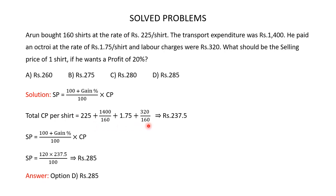Solving this gives a total cost price per shirt of Rs 237.5. Substituting into the formula: selling price equals (100 plus 20) divided by 100, multiplied by 237.5 — that is 120 multiplied by 237.5 divided by 100, which gives Rs 285. So the correct answer is option D, Rs 285.